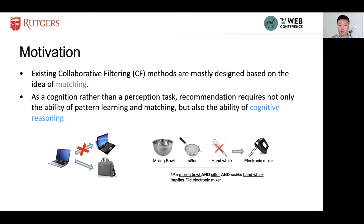Many existing CF methods are designed based on the fundamental idea of similarity matching, with either designed or learned matching functions. However, as a cognitive rather than a perception task, recommendation requires not only the ability of pattern learning and matching, but also the ability of cognitive reasoning.